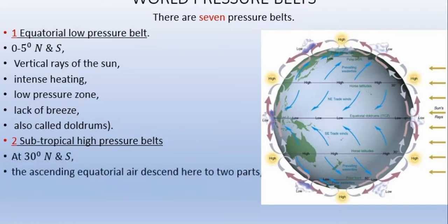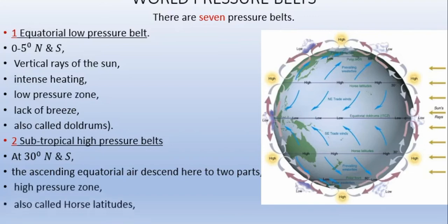The subtropical high pressure belts are at 30 to 40 degrees north and south. Ascending equatorial air descends here, creating a high pressure zone. Compared to the equatorial region, this subtropical high pressure zone has higher pressure, and it is also called horse latitudes.